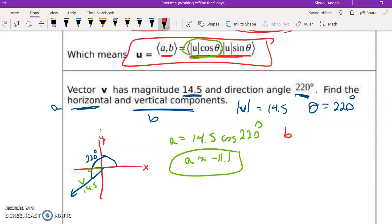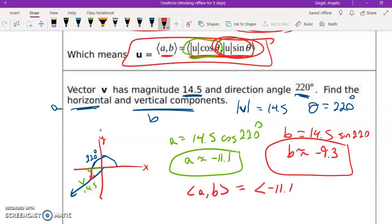Okay, so let's go to B. I'm going to have 14.5 times the sine of 220. And I get B is about negative 9.3. So let's see if that makes sense. So B is negative. Yep, that makes sense. Okay, so our coordinate points for vector AB is negative 11.1, negative 9.3.